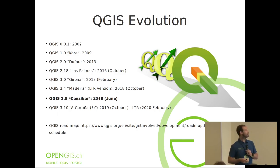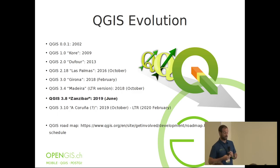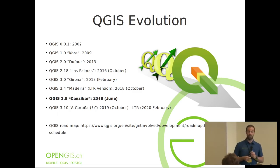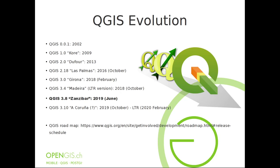QGIS is a product that has been growing steadily for the last 17 years. We are now at version 3.8, which was released in June. We have the feature freeze for 3.10, so in two months — end of October — we will have 3.10 coming out.